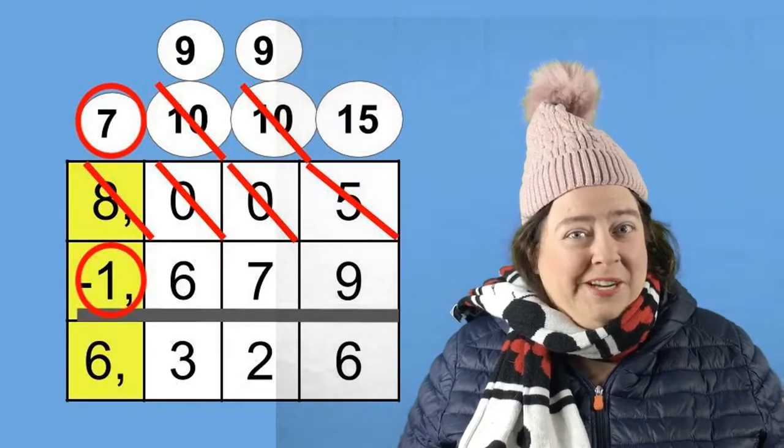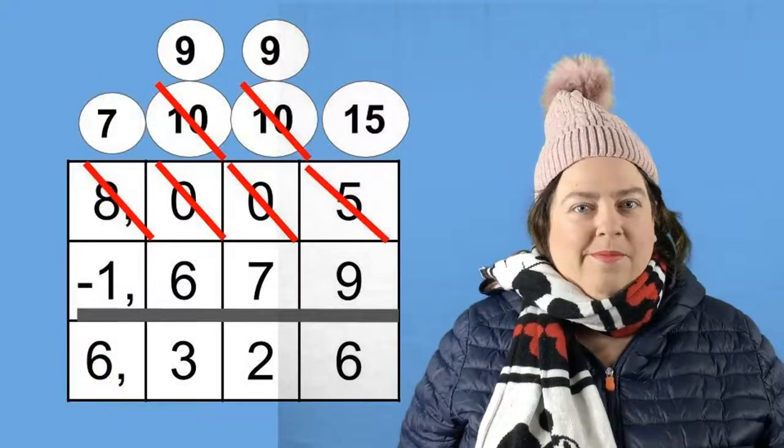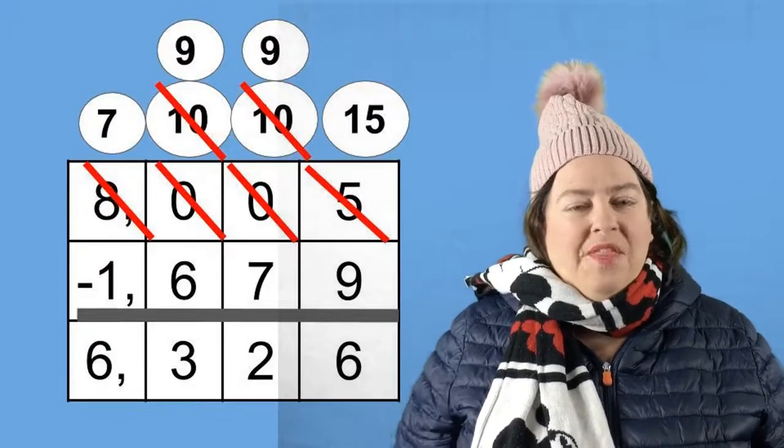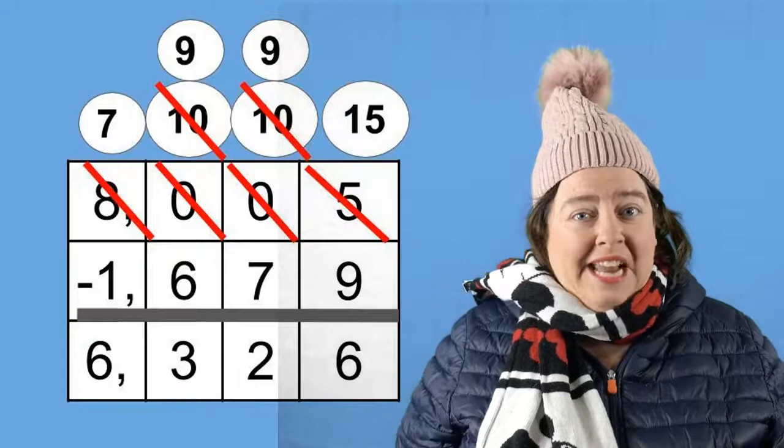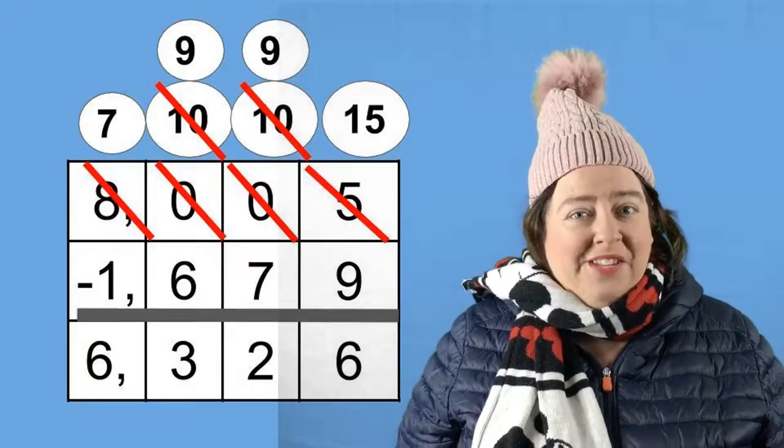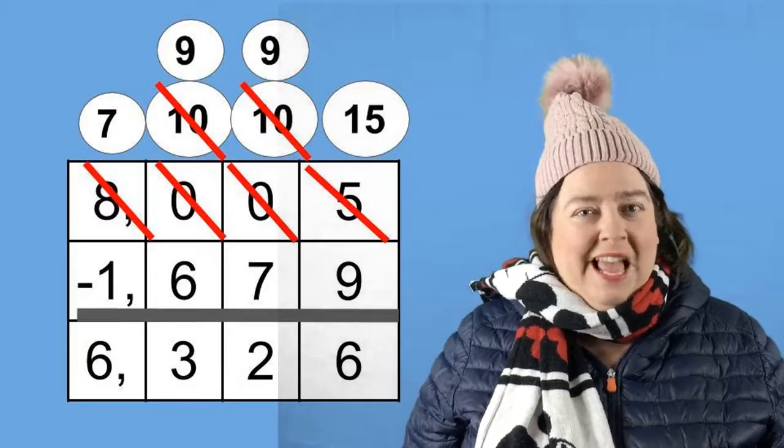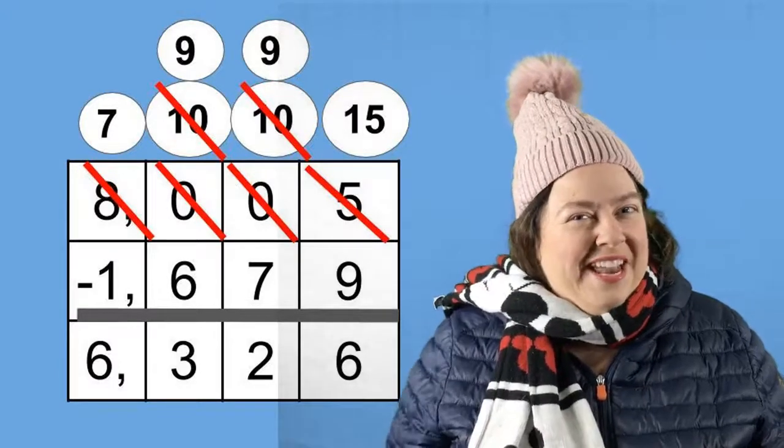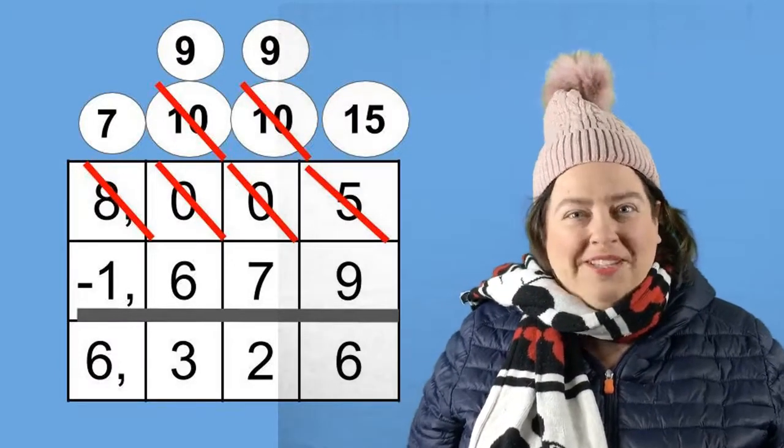Very good job, boys and girls. So when we found the difference to 8,005 and 1,679, we got 6,326. Now that took a lot of work, didn't it? But you must admit, it was fun throwing those snowballs to help us regroup.